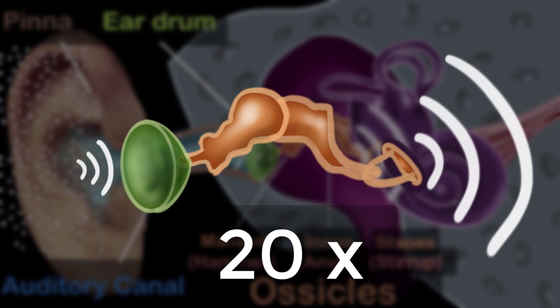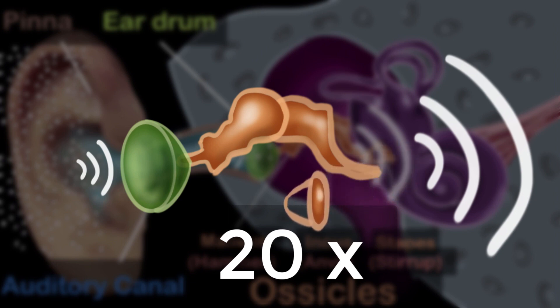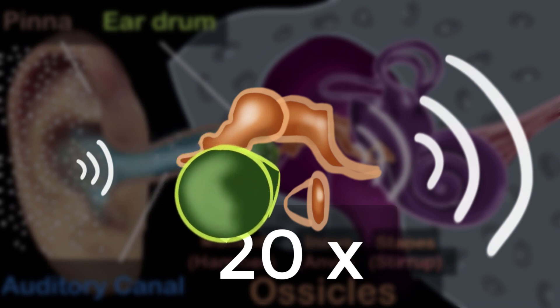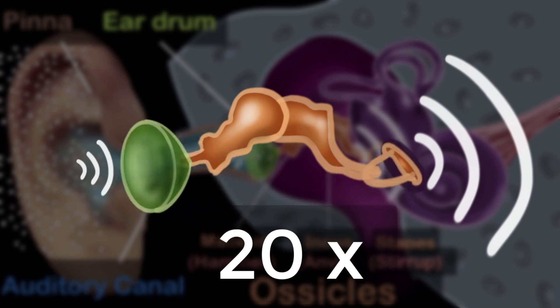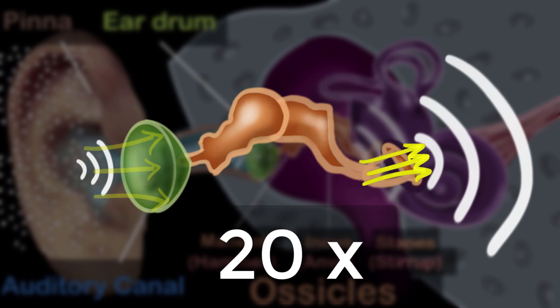But how do they do that? Just take a look at the base of the stapes — it has such a small area compared to that of the eardrum. So when the force gets transmitted from the eardrum to the stapes, it gets concentrated in a very tiny area. And when you concentrate force in a very tiny area, you increase its pressure.